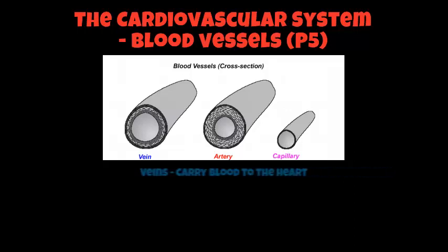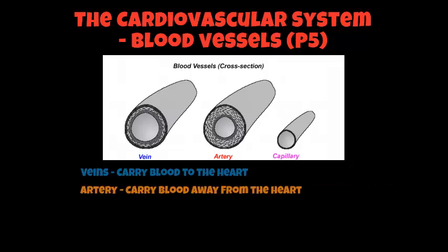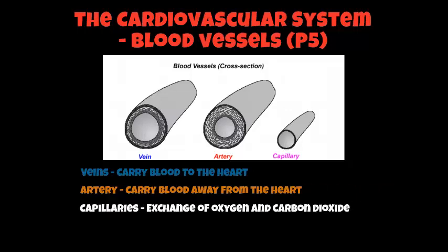First of all we are going to look at your veins, and your veins' job is to carry blood to the heart. Your arteries carry blood away from the heart. Your capillaries are where oxygen and carbon dioxide — two gases essential when you exercise and when you are at rest — are exchanged. So capillaries is where your oxygen and carbon dioxide are exchanged, and that is quite an important part of our blood vessels within the body.